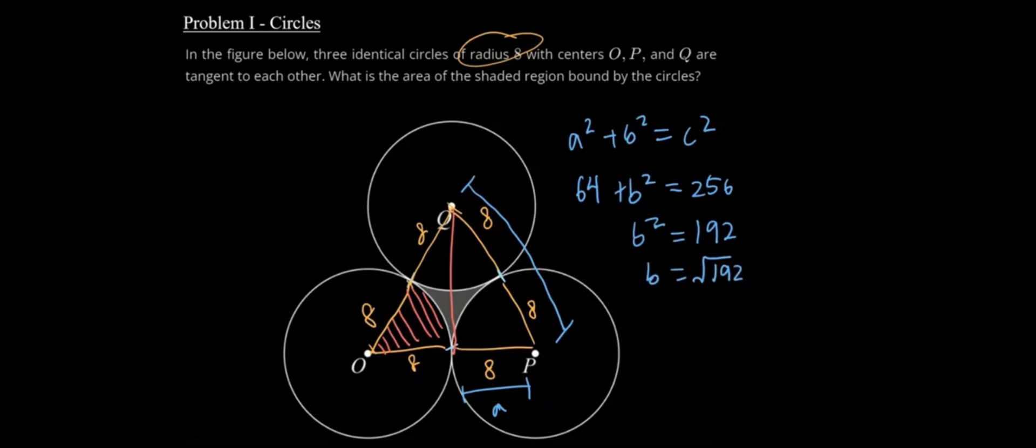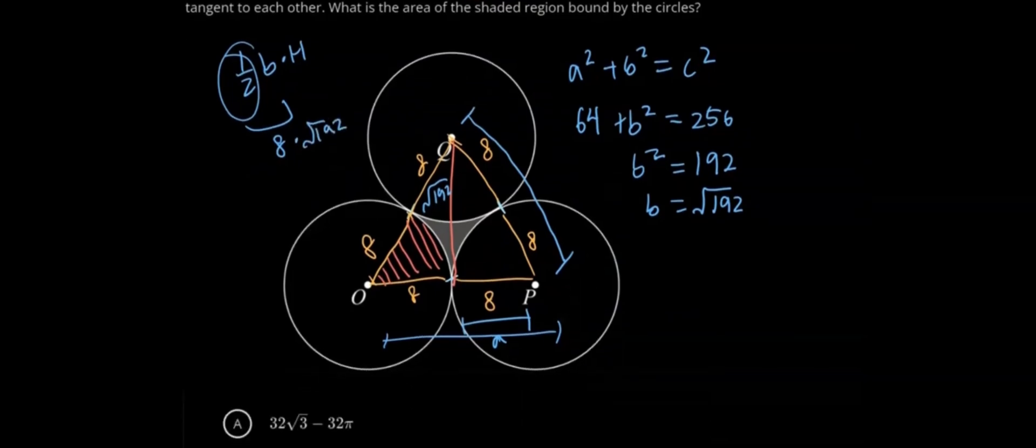Now that we know that, we can find the area of the triangle because we know that this side is square root of 192. The formula for the area of a triangle, which will be given to you on the SAT, is one-half times base times height. Our height here is square root of 192. Our base is technically 16, but we can apply the dividing by 2 rule, so the total is just 8 times the square root of 192.